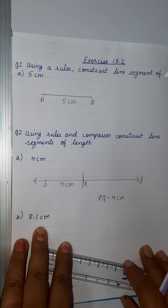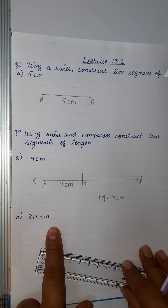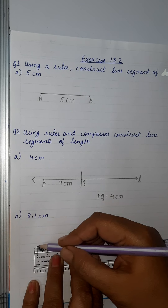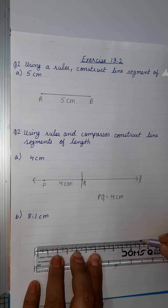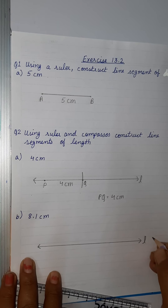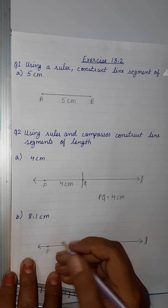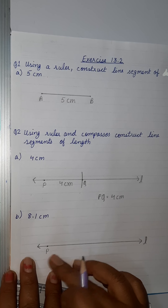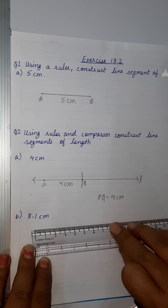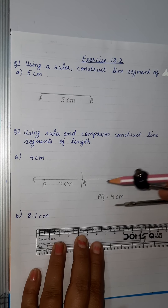Similarly, let's take one more example: 8.1 centimeters. First of all, draw a line of any measurement, name it as l, and mark a point P at the beginning without any measurement.